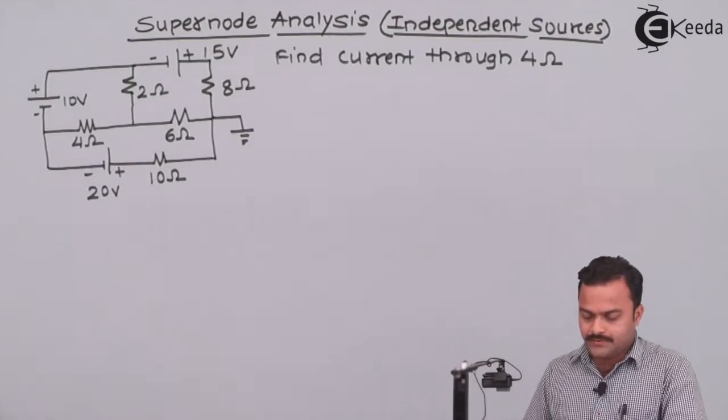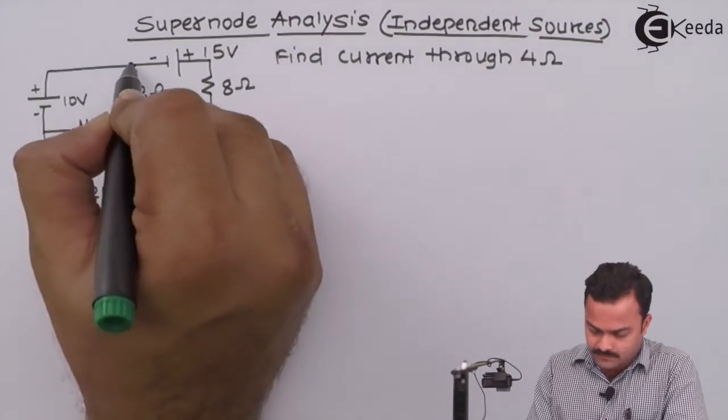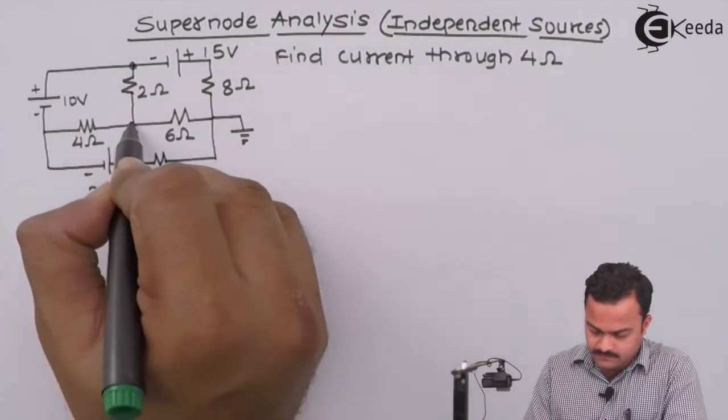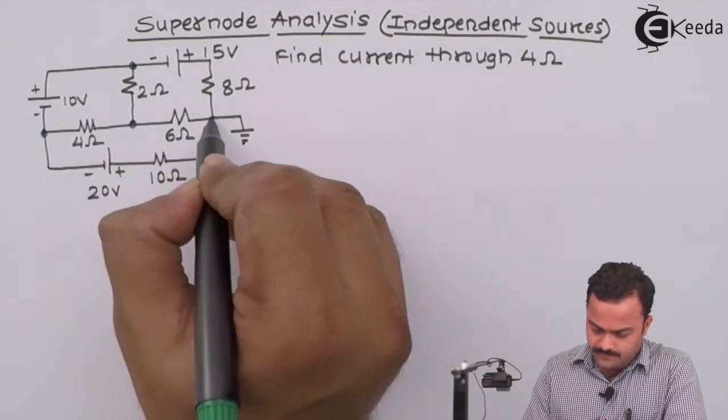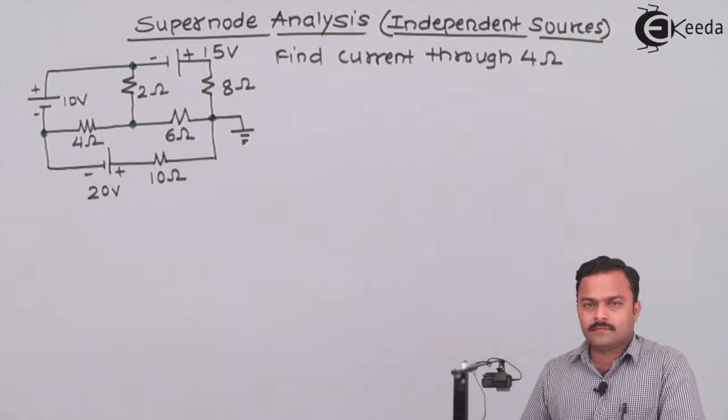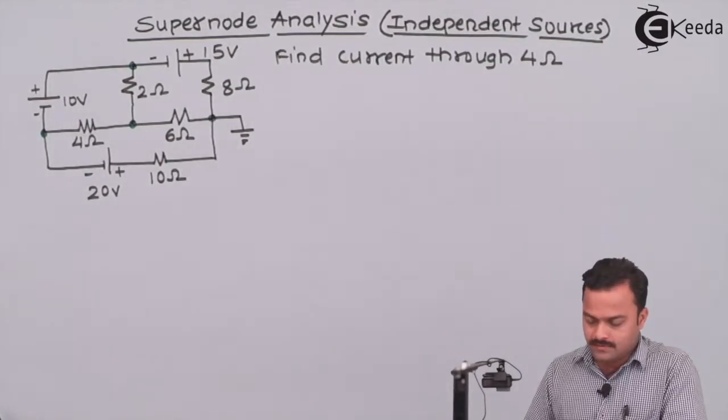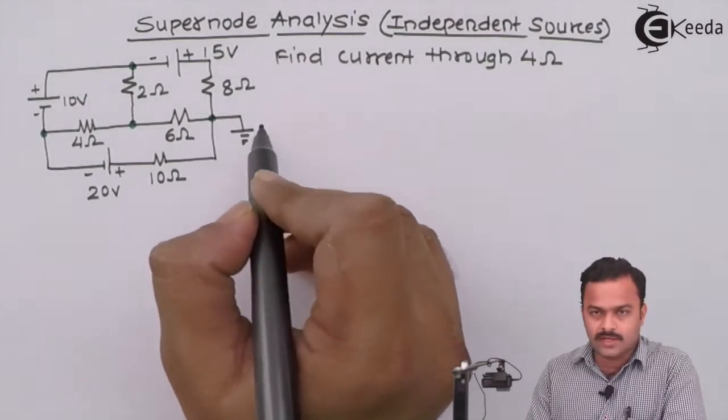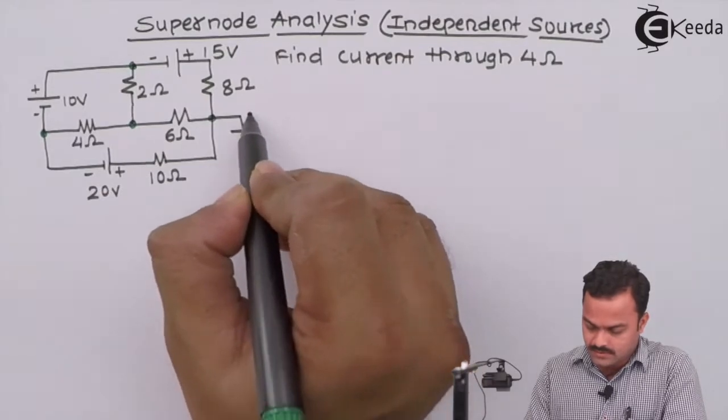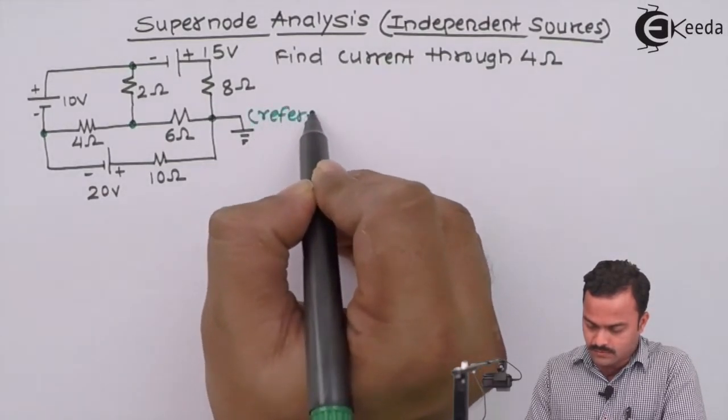Let's mark all the nodes first: one, two, three, and four. Next step, we have to mark a reference. The reference is given by them, so this is the ground with potential zero. This node is a reference node.